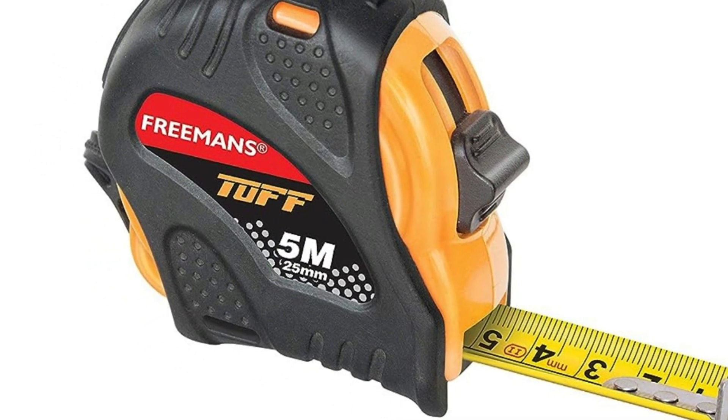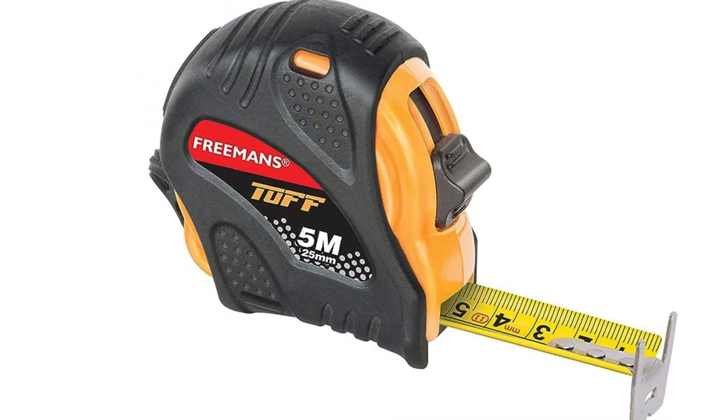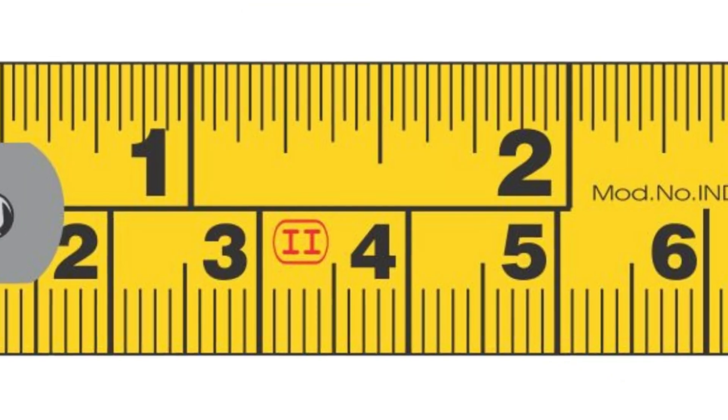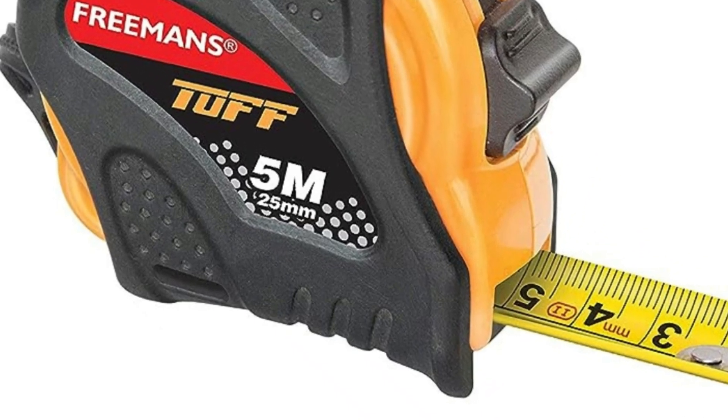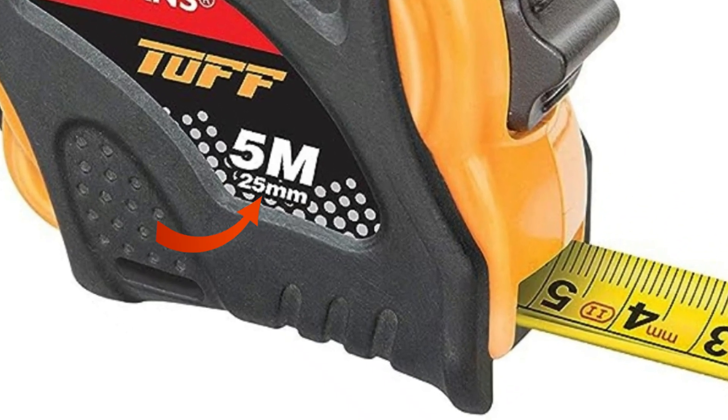Here I am using a Freeman's 5m tape, which is a typical size for construction projects. The tape width is important for stability during measurements. This tape is 25mm wide, providing more durability and making it easier to read while preventing it from bending too much when extended.